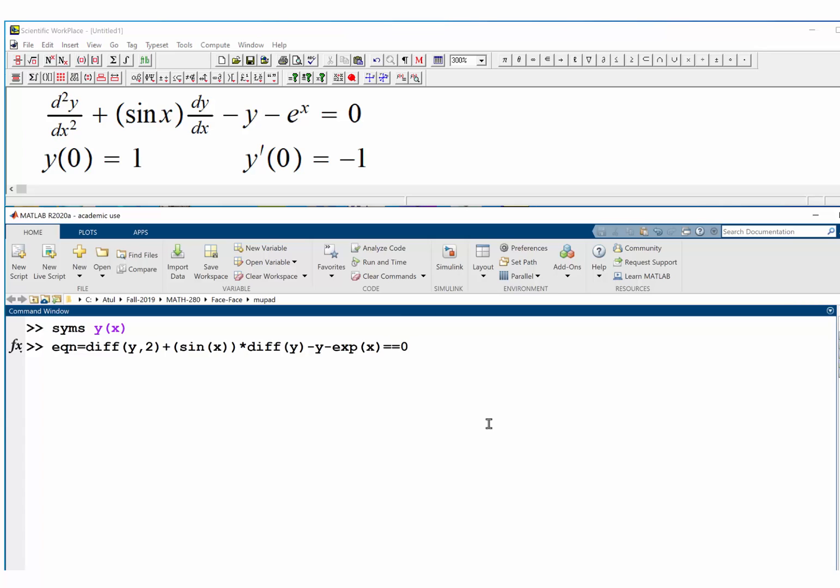Even if we don't write comma 1, I think by default it will take it as the first derivative and then the exponential of x. And we have to put, for this purpose, we have to put two equal signs over there. And now the equation is defined.